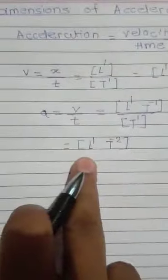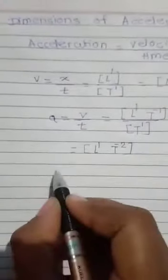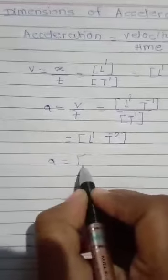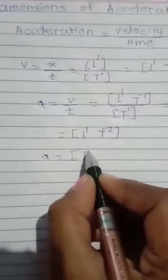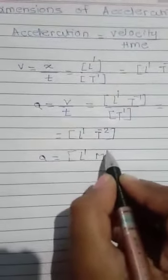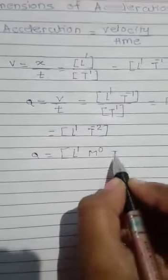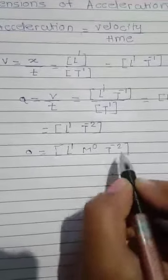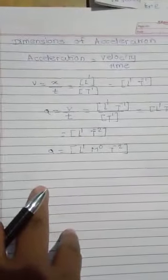These are the dimensions of acceleration. Written in standard form, the dimensions are L raised to 1, M raised to 0, and T raised to minus 2. These are the dimensions of acceleration.